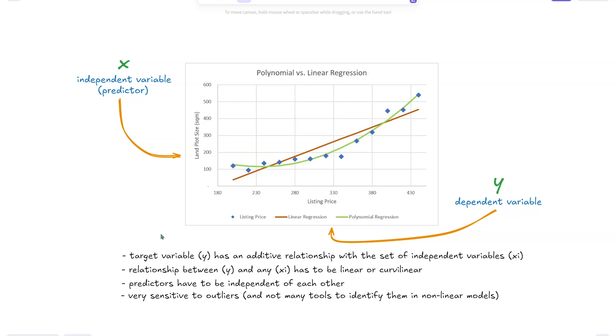However, the polynomial regression model is very sensitive to outliers, and generally there are not many tools to identify outliers in non-linear models.